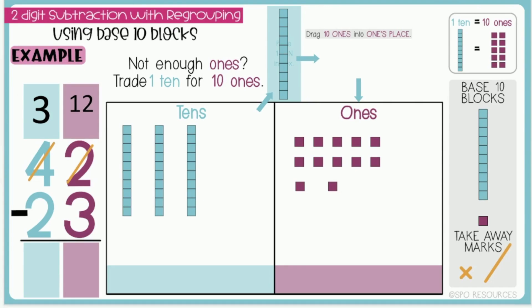Now I can subtract three ones. I am left with nine ones, so I will type nine ones in the box.